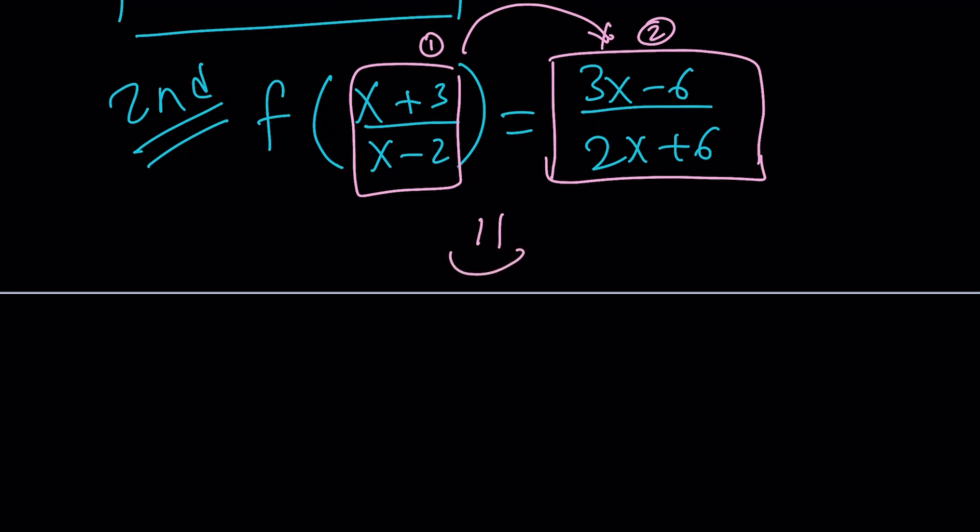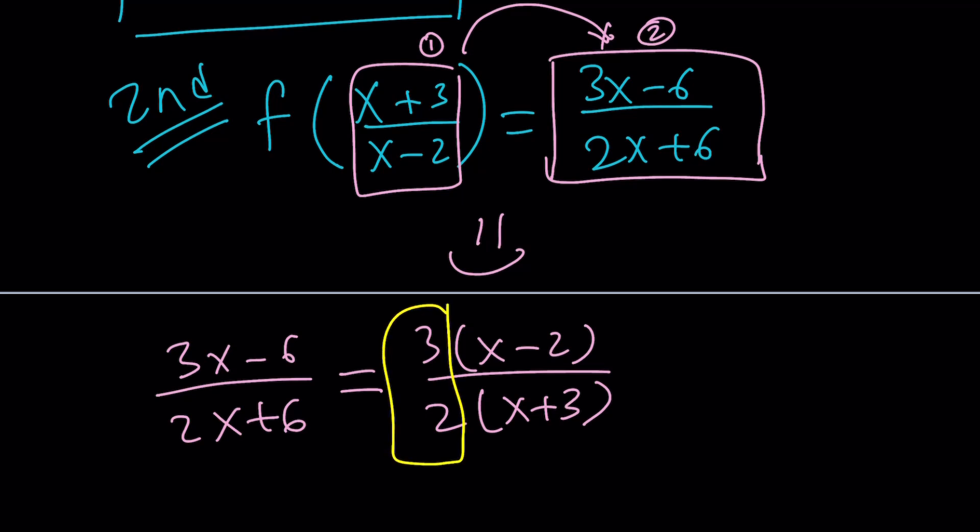We're going to focus on factoring the 3x minus 6 over 2x plus 6 first. Because it's factorable. Take out a 3, you get x minus 2. Take out a 2, x plus 3. Now, take this out. And you get 3 over 2 times x minus 2 over x plus 3. Does that look familiar? Look at this expression and look at this expression. And look at it one more time if you didn't get it. Yes!